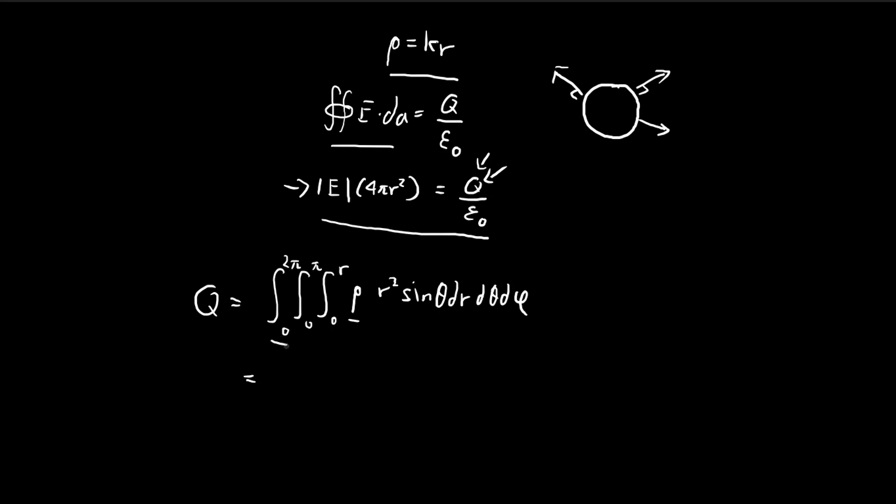So let's just get rid of the phi terms. You see that there are no phi terms inside this expression here, so I can just multiply this by 2π. Let's also get rid of the theta. Essentially, we have an integral of sine theta from 0 to π. And if you work that out, it's going to be equal to 2.